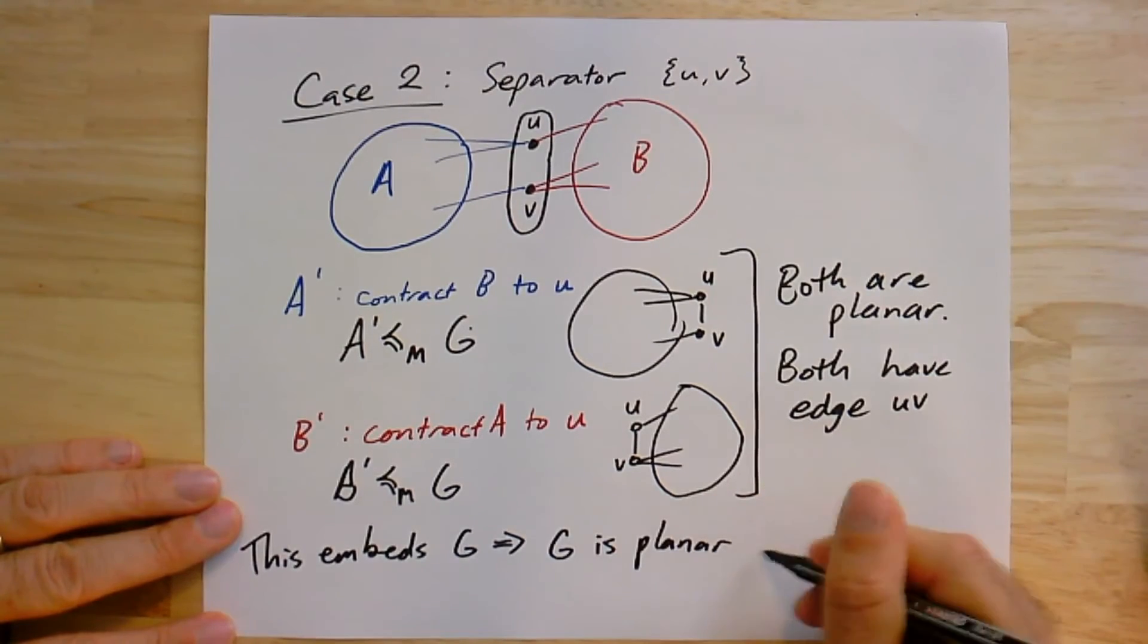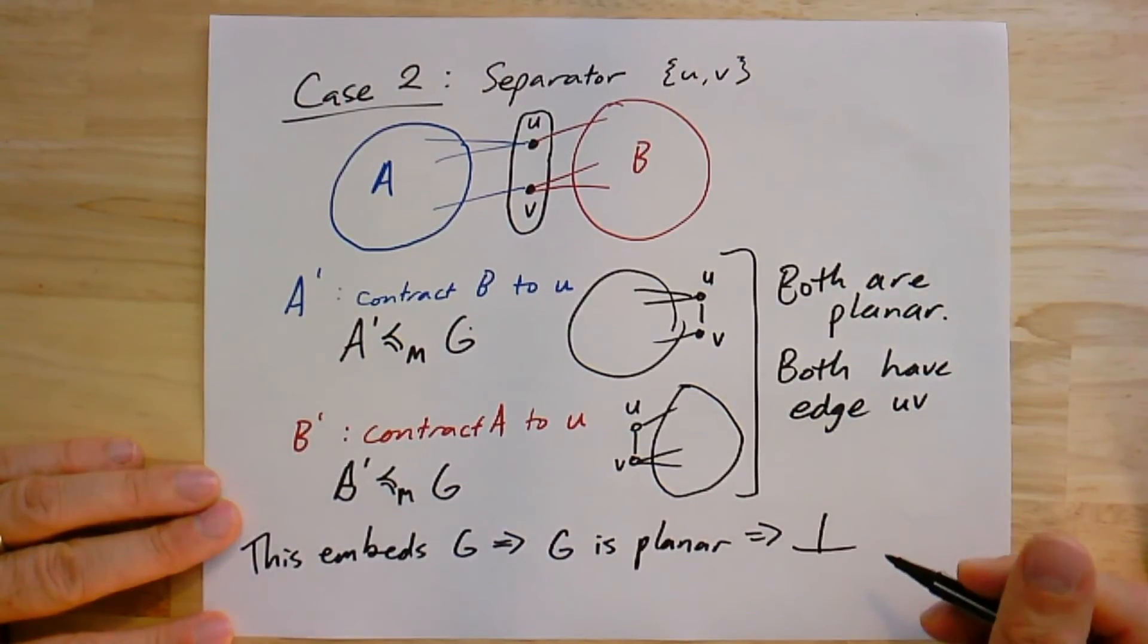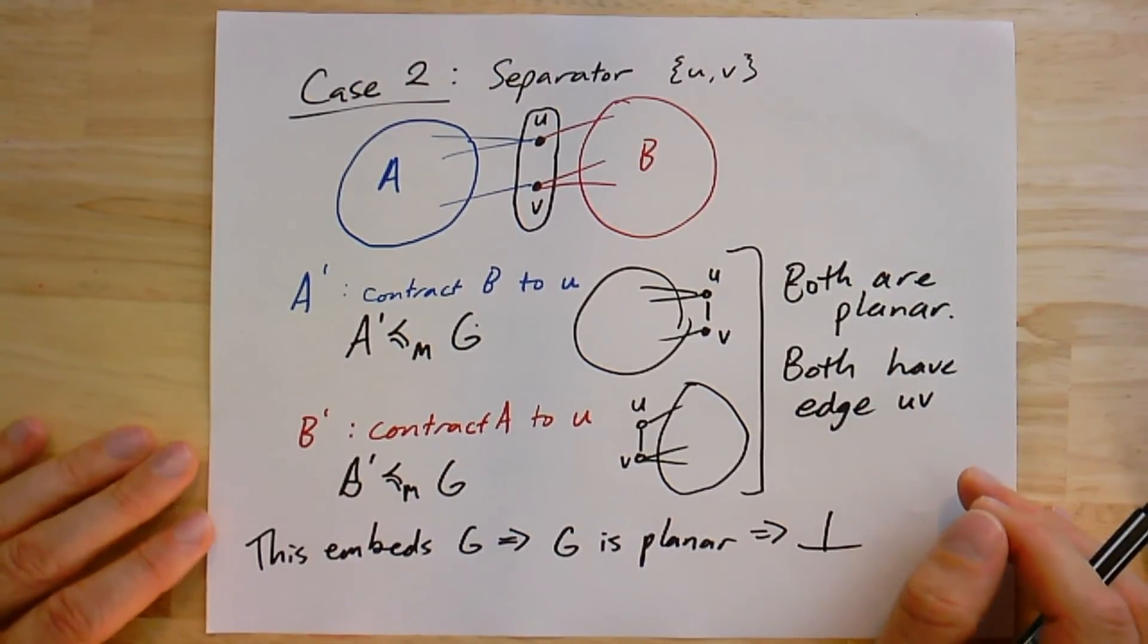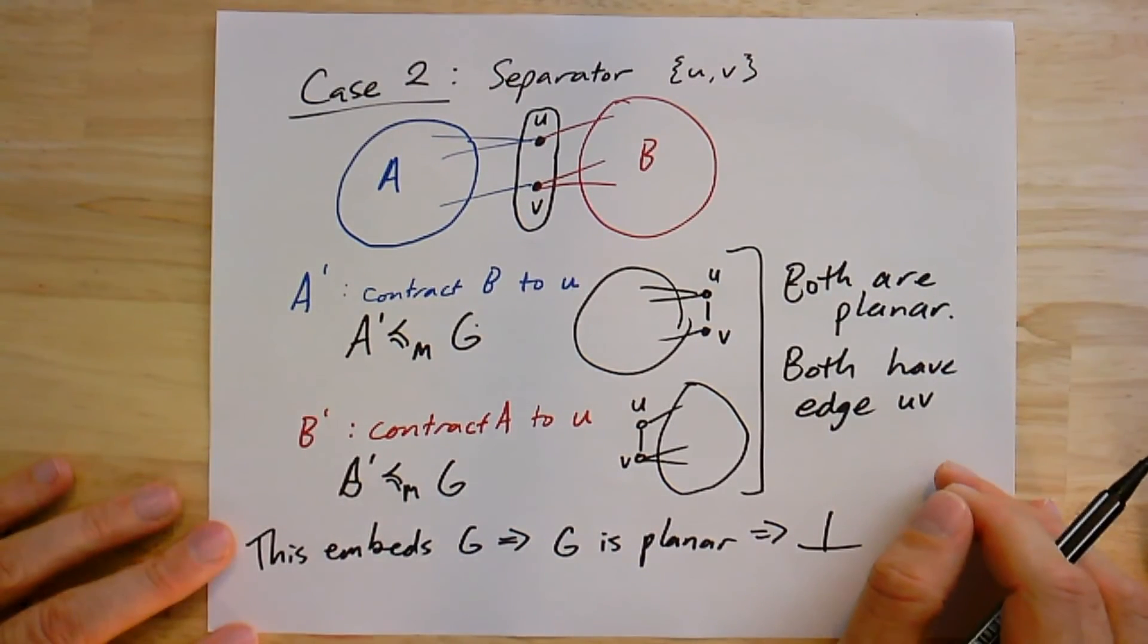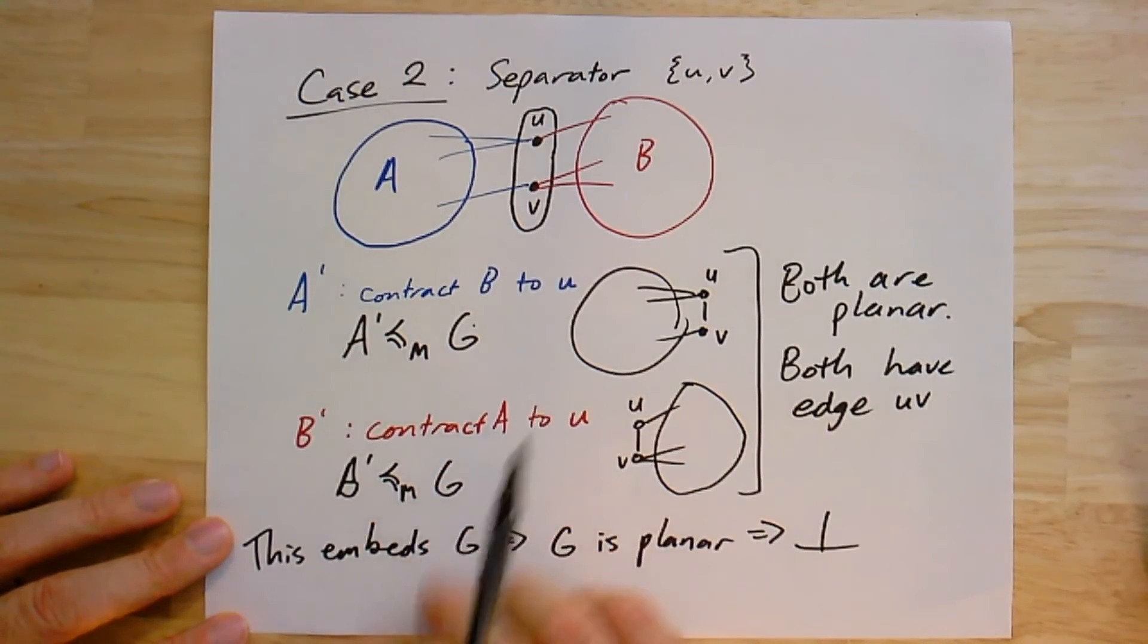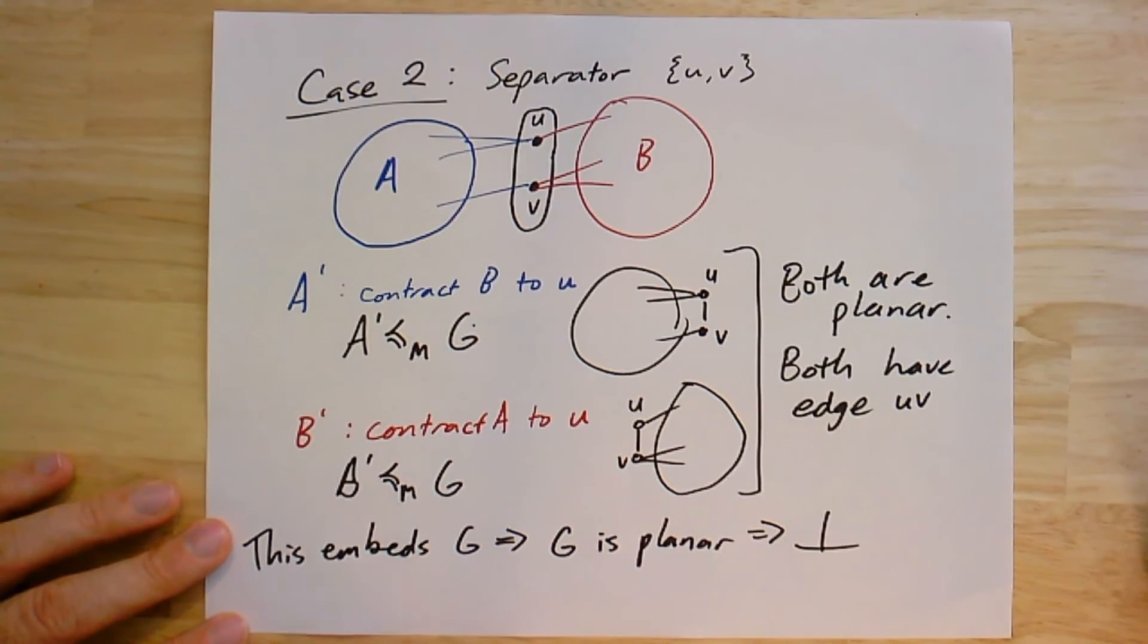We conclude that this case is also a contradiction. So G has to be at least three connected because two connectivity was not enough, one connectivity was not enough, zero connectivity was not enough. But three connectivity must be true. And so this is exactly the lemma we wanted to prove.